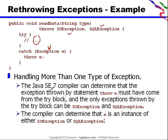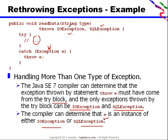So, handling more than one type of exception - the Java 7 compiler can determine that the exception thrown by the statement 'throw E' must have come from the try-block, and the only exceptions thrown by the try-block can be either IOException or SQLException. The compiler can determine that E is an instance of either IOException or SQLException, so the compiler is now smart enough to find the instance of the exception that is put in the throws clause.